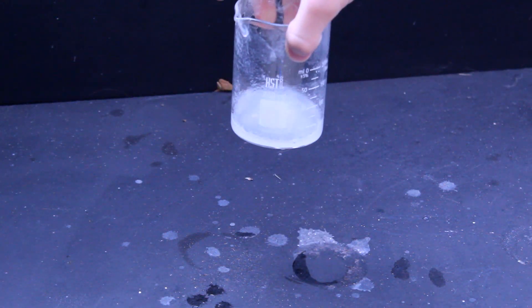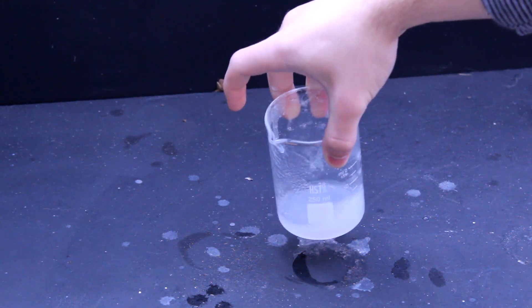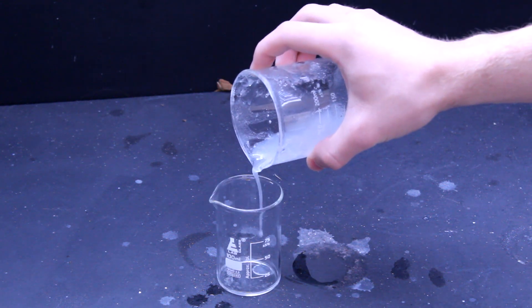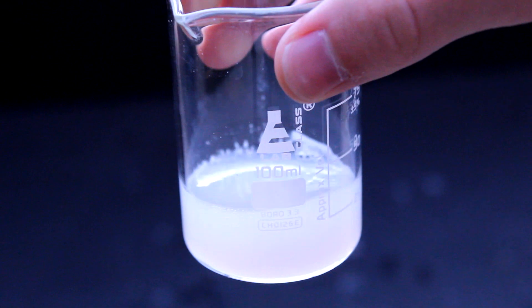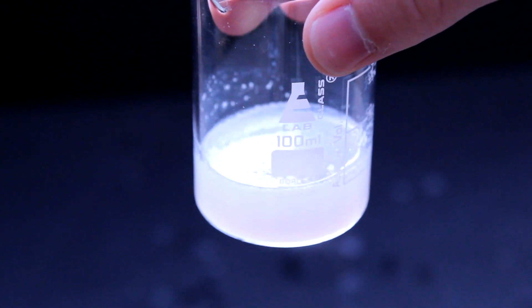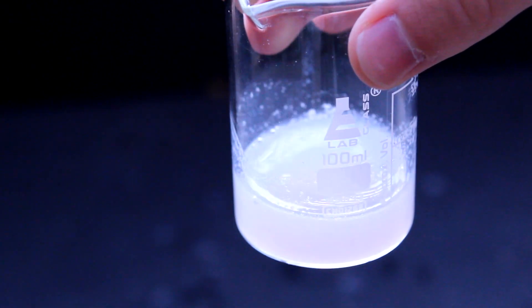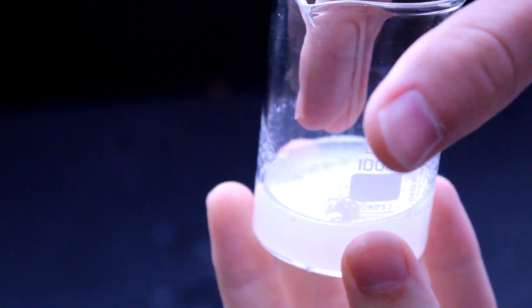Once all the acid is added, a white gelatinous precipitate will form. This is actually glass, or more specifically, a hydrated form of glass known as silica gel. Some of the silica is also still dissolved in solution as the compound known as silicic acid, which is actually pretty cool when you consider how insoluble sand and other forms of silicon dioxide are.